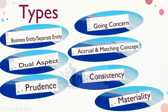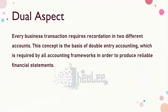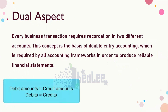Another concept is the dual aspect concept, where every business transaction requires recordation into two different accounts. This concept is the basis of double entry accounting, which is required by all accounting frameworks to produce reliable financial statements. You are required to have debit entries and credit entries for transactions, and the total debit amounts will be equal to the total credit amounts. For every debit, there is a corresponding credit — that is the dual aspect, also referred to as the double entry concept.